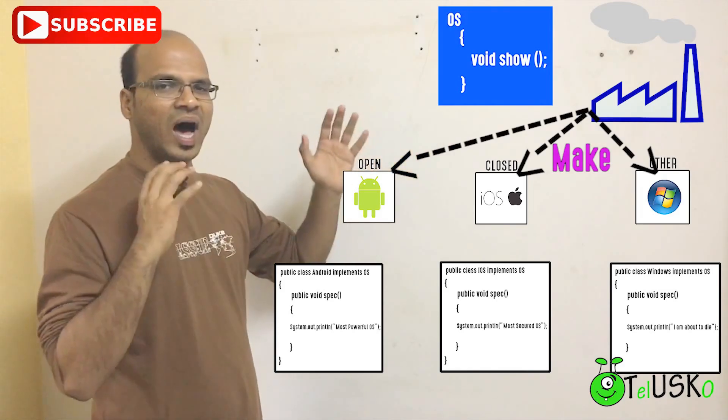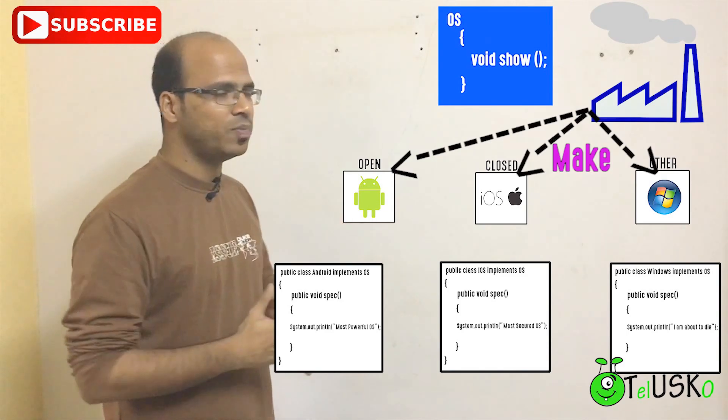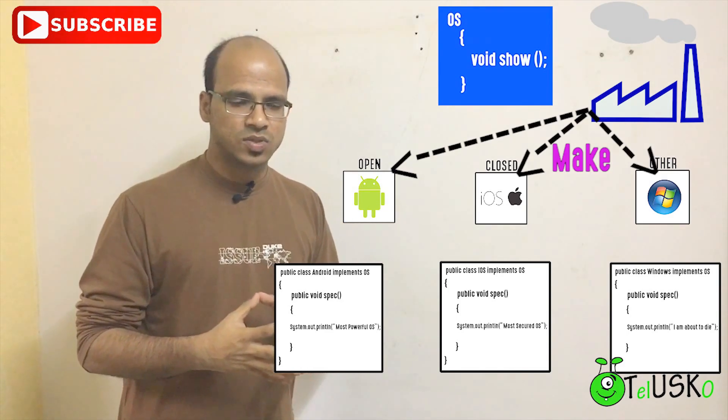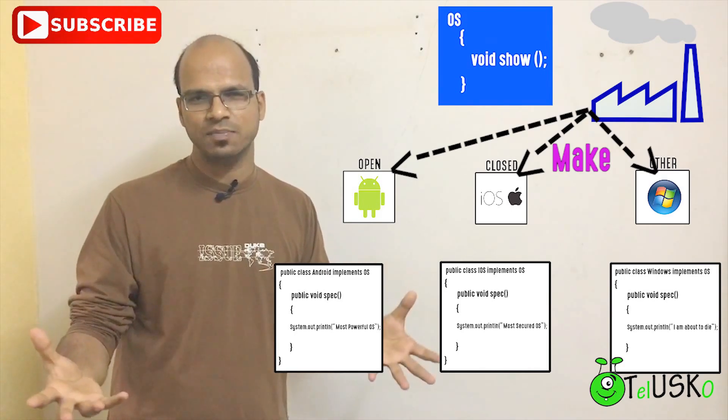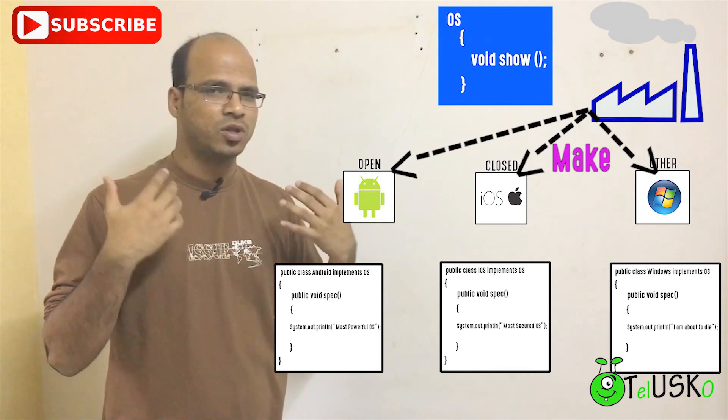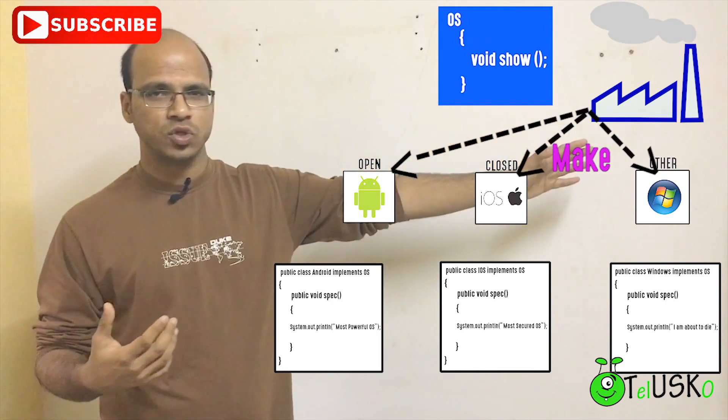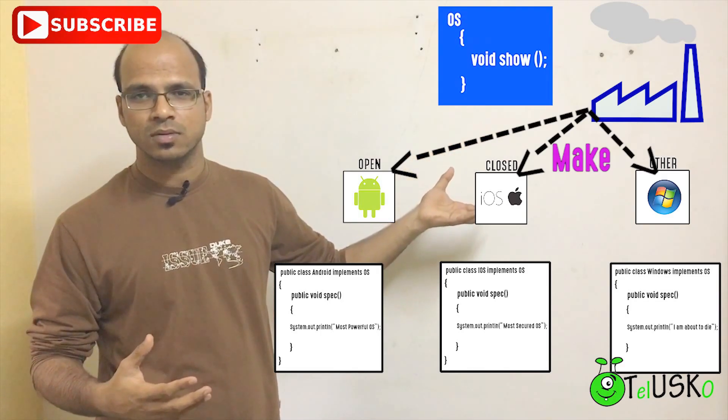Instead of you creating this object, ask someone else to create this object. Maybe in future you will be having a new OS, let's say you have Symbian, it's an old OS. You have one more class there. As a normal user, you are not concerned about which OS you want, you just say I want old OS, they will give you an object of Symbian.